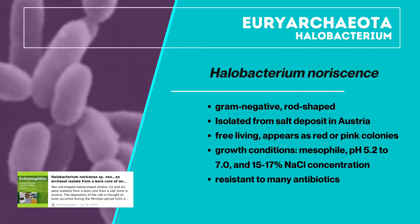Halobacterium noricense is gram-negative, rod-shaped, and was isolated from a salt deposit in Austria believed to have been formed during the Permian period. They are free-living and appear as red or pink colonies due to the presence of carotenoids and bacterioruberins. They are known to be mesophiles with an optimum growth temperature of approximately 37 degrees Celsius and an incubation period of 18 days. They thrive in acidic conditions at pH 5.2 to 7 and in NaCl concentration between 15 to 17 percent. They are resistant to many antibiotics including vancomycin and tetracycline, but can be killed by anisomycin.